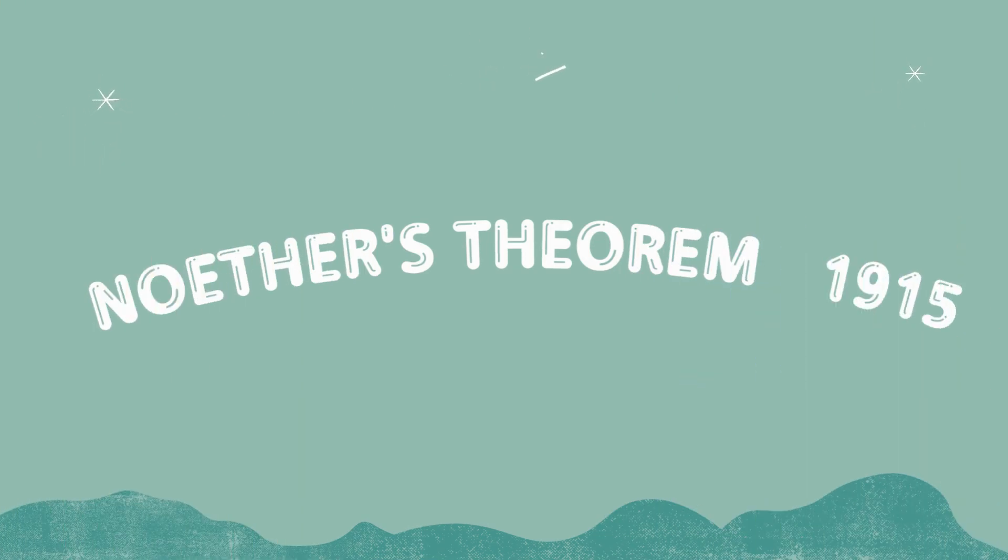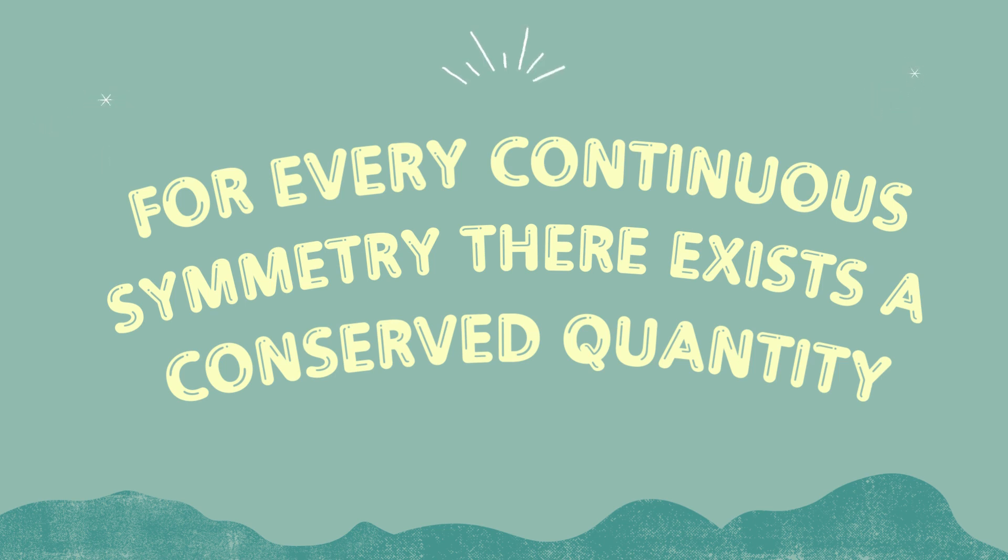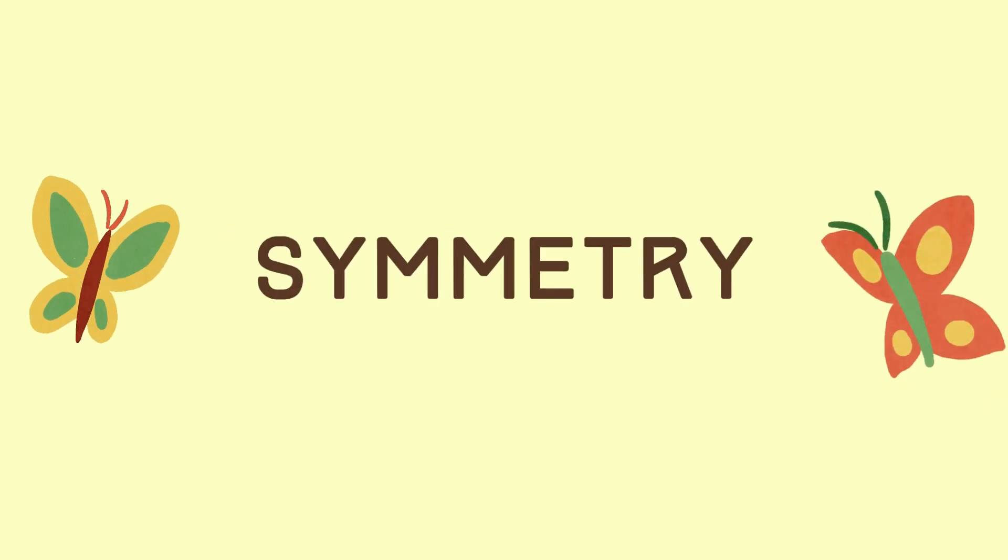In 1915, Noether's theorem was introduced by Emmy herself, and this stated: for every continuous symmetry, there exists a conserved quantity. But what does this mean exactly?